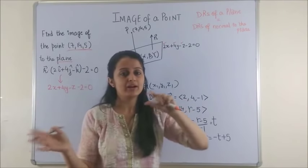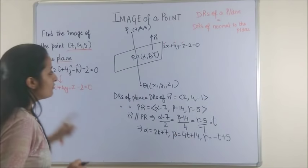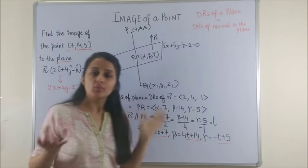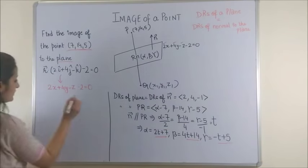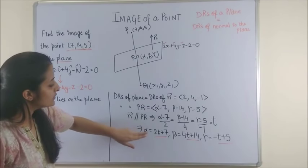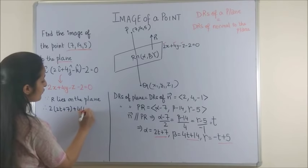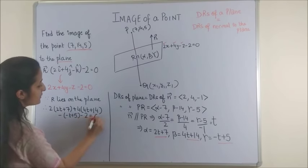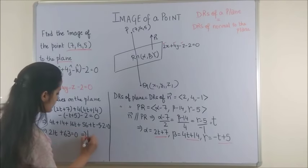Please note all these symbols α, β, γ, T or x₁, y₁, z₁ is something which I am choosing on my own. You are free to do the same. Now once I have the points α, β and γ as you can clearly see this point R also lies on the plane. What does that mean? That simply means that my point R is going to satisfy the equation of the plane. So we say since R lies on the plane therefore I am substituting the values for α, β and γ in the given equation. So we get 2(2T + 7) + 4(4T + 14) - (-T + 5) - 2 = 0. Let's solve for the value of T once again. So on simplifying we get 21T + 63 = 0 which means T = -3.